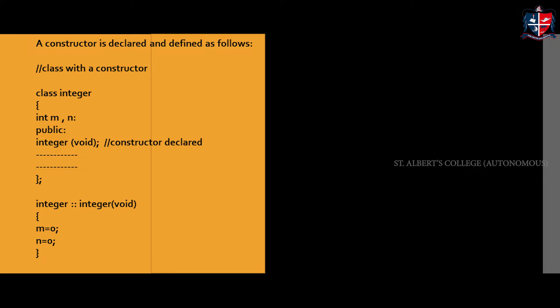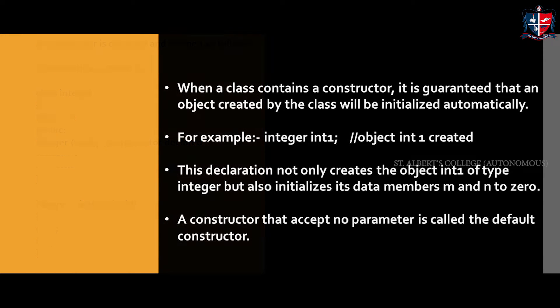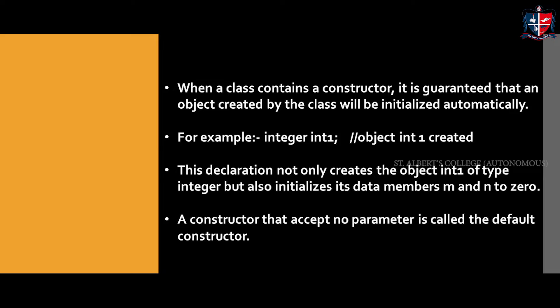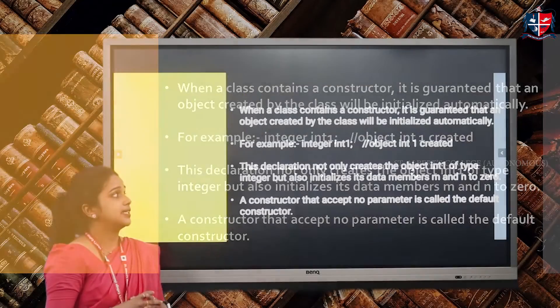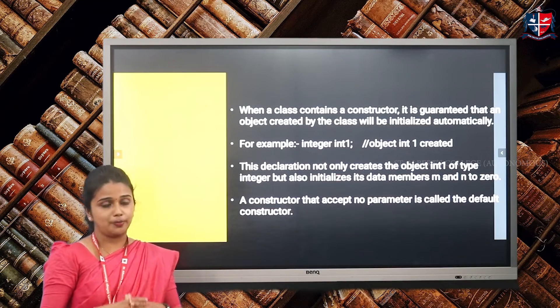The constructor integer() is defined outside the class specification. Here is the definition of the constructor. Inside the function, we are initializing the values of the data members. Both data members m and n are initialized to the value 0. Whenever a class contains a constructor, it is guaranteed that an object created by the class is initialized automatically.